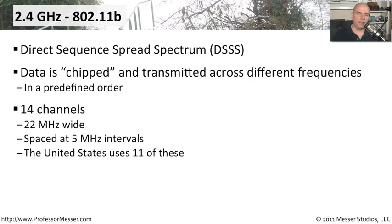802.11b has 14 channels available. Each channel is 22 MHz wide and channels are spaced at 5 MHz intervals, which means there is significant overlap. That's why we tend to use only channels 1, 6, and 11 — because those channels will not conflict with each other. In the United States, we use 11 of these channels. Other countries are able to use channels 12, 13, and 14.